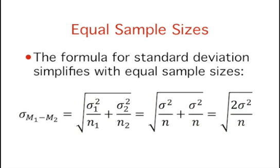As shown here, the formula for the standard error of the difference between means is much simpler if the sample sizes and the population variances are equal. Since the variances and sample sizes are the same, there is no need to use the subscripts 1 and 2 to differentiate these terms. The standard error of the difference between means is the square root of twice the variance divided by the size of each sample.